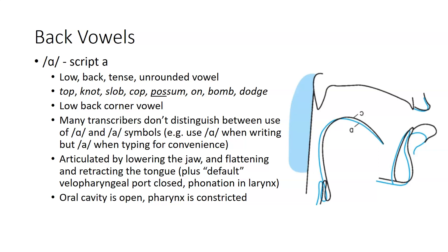The lowest of the back vowels is aw, referred to as script A. It is a low back tense and unrounded vowel, found in words like top, knot, slob, cop, the first syllable of possum. It is the low back corner vowel. A lot of times when reading clinical descriptions or papers, there may not be a distinction between the script A symbol and the regular old A.